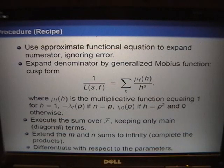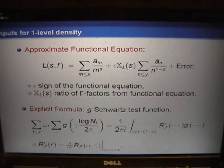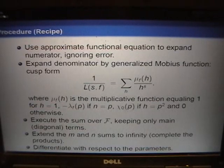Third, we execute the sum over the family, interchanging the order to bring the sum over the family inside, keeping only the main terms. Fourth, we extend the M and N sums from the approximate functional equation to infinity and complete the products. Fifth, we differentiate with respect to the parameters.